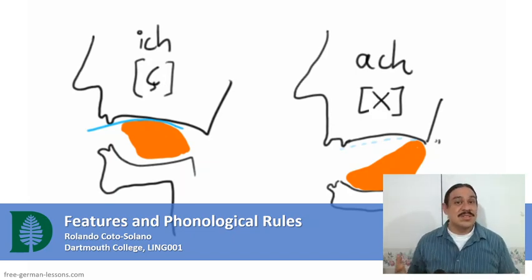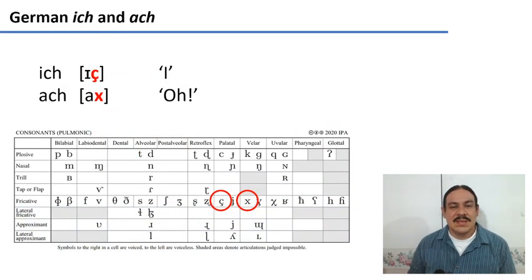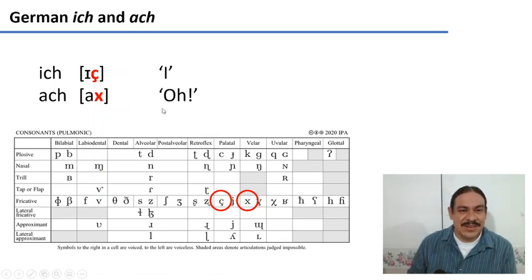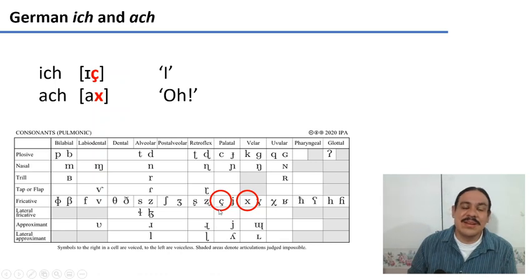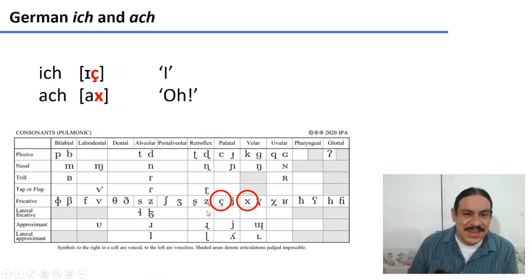We're going to look at one such rule, and we're going to look at an example from German. German has these two words: ich and ach. Ich has a sound here that is the voiceless palatal fricative. It also has a velar voiceless fricative, as in ach. Ich, ach.